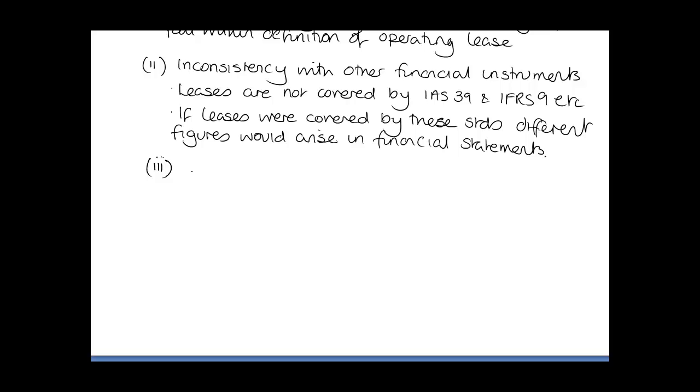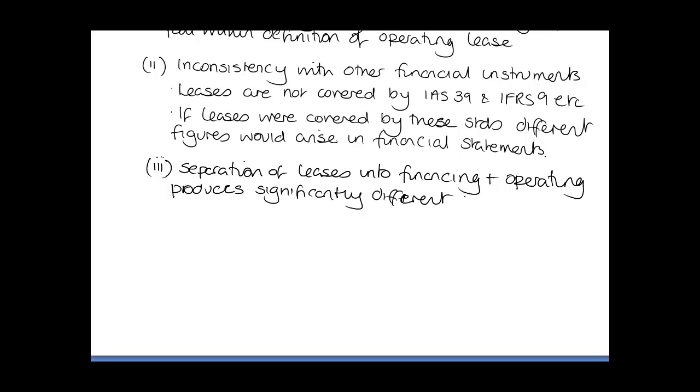Thirdly, the separation of leases into financing and operating produces significantly different ratios. This is conceptually flawed because often the difference between a finance lease and an operating lease is very small, and yet the impact it can have on the accounts can be very big. Surely that's wrong.